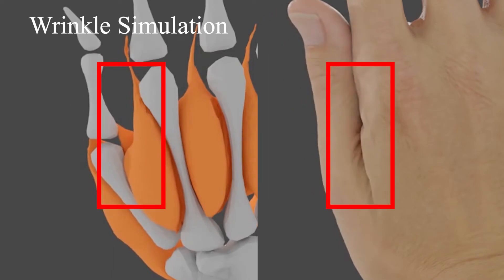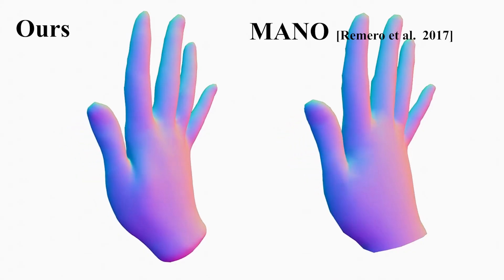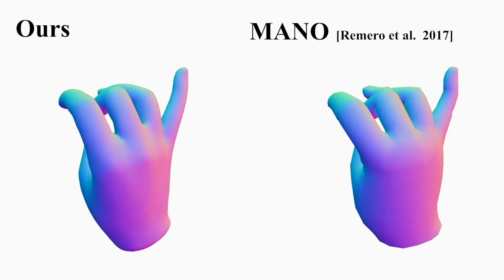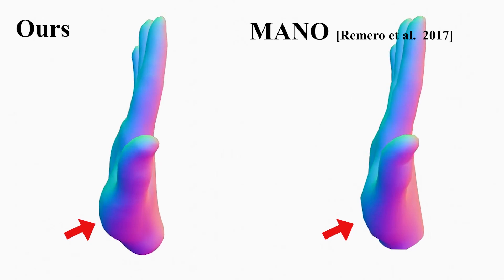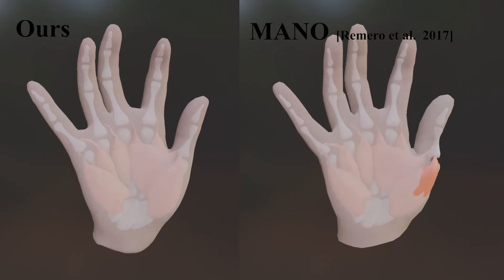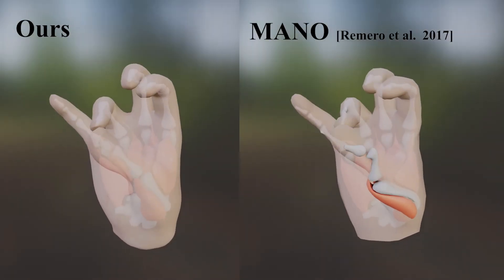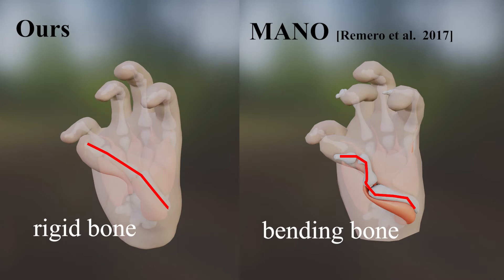We compare with MANO, a state-of-the-art hand model. NIMBLE retains skin details during deformation while MANO provides an overly smooth skin. MANO also presents implausible flexion of the inner bone and muscle, whereas NIMBLE maintains anatomically correct and physically possible deformation.